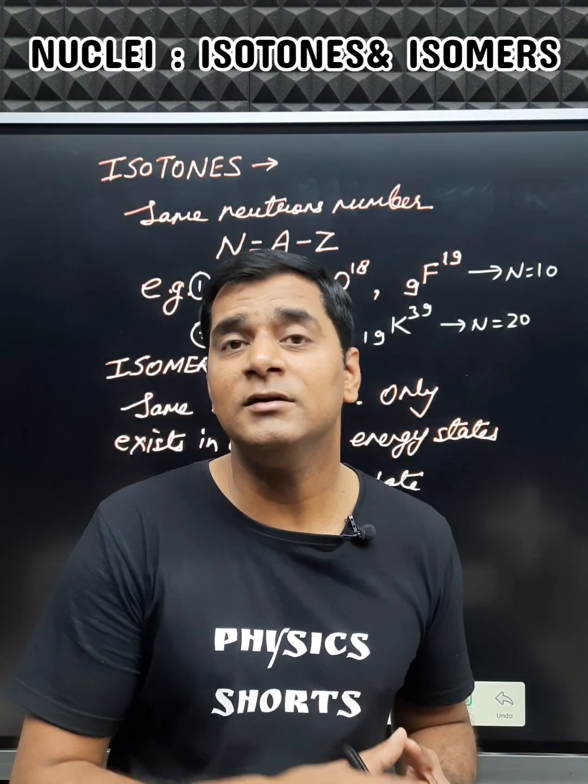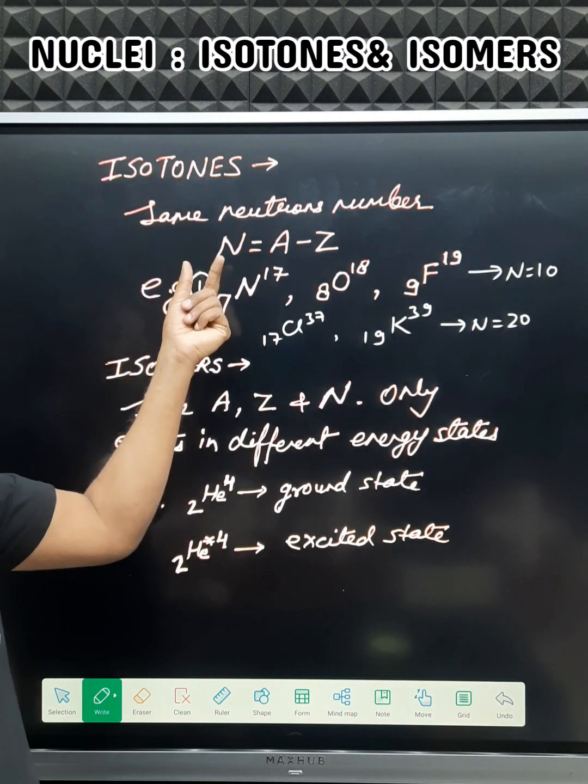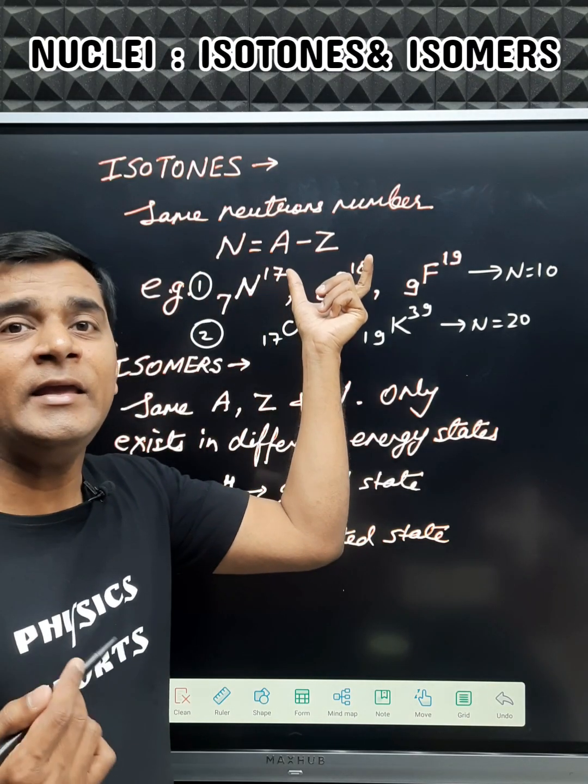The different nuclei having the same number of neutrons are called isotones, and the number of neutrons is given by A minus Z.